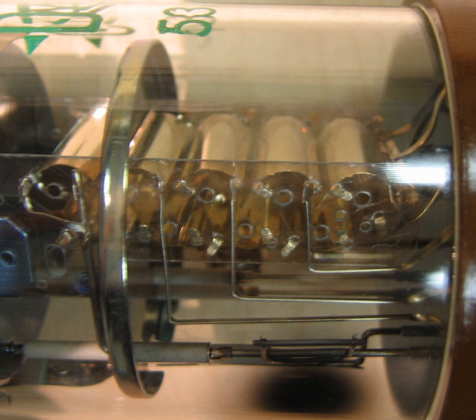The electron multiplier consists of a number of electrodes called dynodes. Each dynode is held at a more positive potential, by approximately 100 volts, than the preceding one. A primary electron leaves the photocathode with the energy of the incoming photon, or about three electron volts for blue photons, minus the work function of the photocathode.